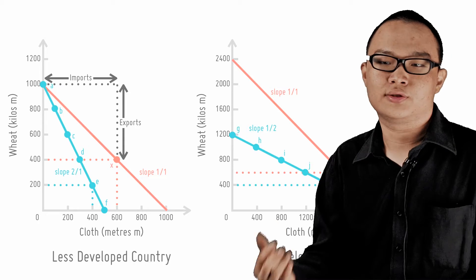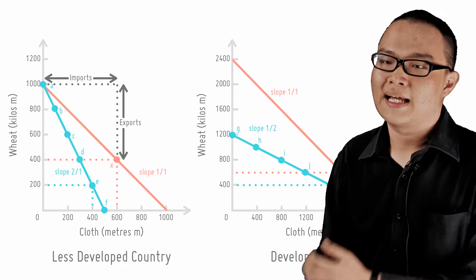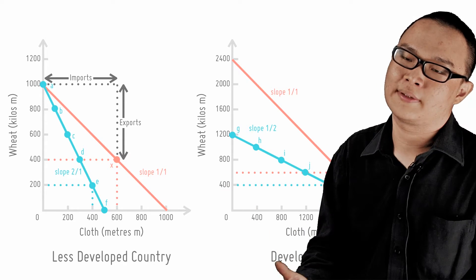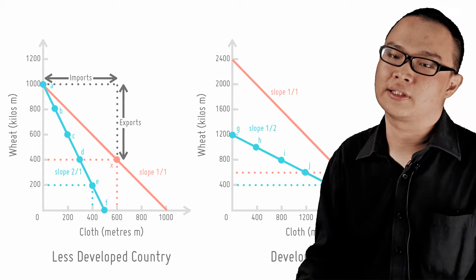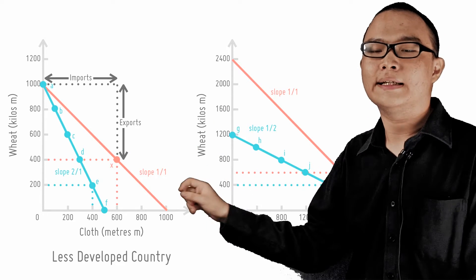The PPC for both countries is shown above in blue. As we assume under comparative advantage theory that there are no scale economies, the PPC is a straight line.